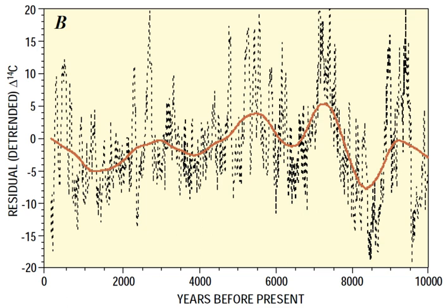Such reconstructions indicate that the overall level of solar activity since the middle of the 20th century stands amongst the highest of the past 10,000 years, and that epochs of suppressed activity of varying durations have occurred repeatedly over that time span.